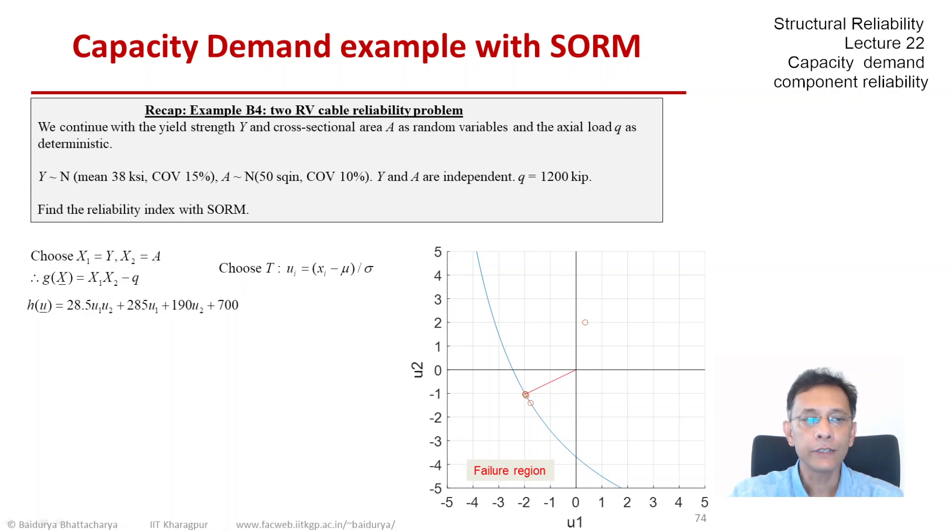Now we did solve this problem with FORM and the optimal point was negative 1.97 for U1 and negative 1.03 for U2. And the beta, the minimum distance was 2.225.